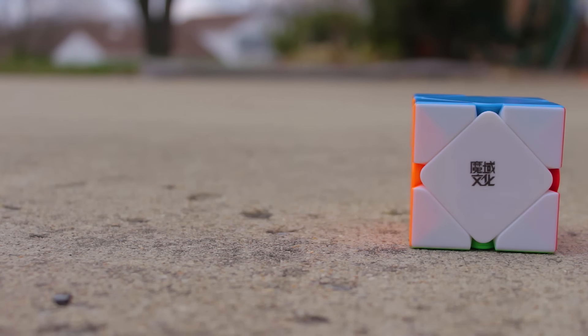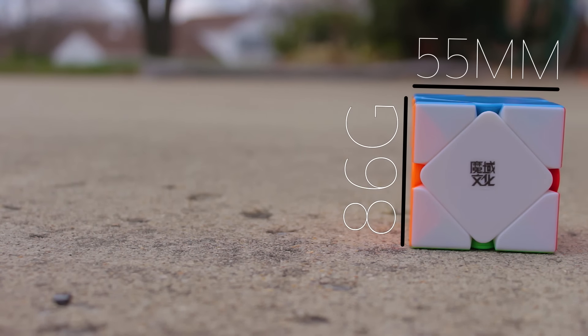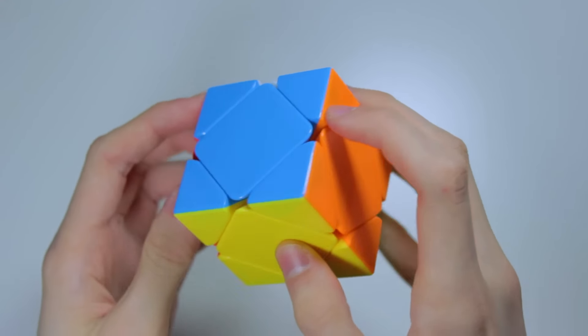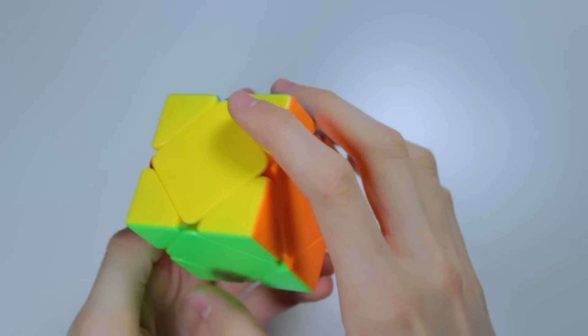Getting the specs of this cube out of the way, this cube measures in at 55mm across, and weighs 86 grams, making it lighter than most other scubes. Additionally, it's $14 at thecubicle.us, and while I got the stickerless version, the black and white plastic models both come with standard Moyu shades.